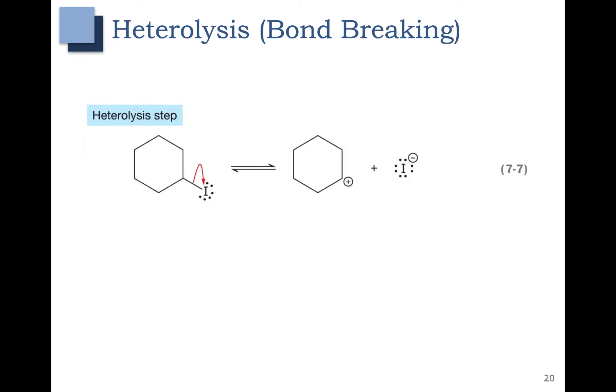Heterolysis or bond breaking is the opposite of coordination. You can see here the carbon iodine bond breaking to form a lone pair on I minus. The carbon iodine bond in red breaks and those become the red lone pair on I minus. Remember that there is a hydrogen at this carbon and that's why there is a positive charge on the carbon once the iodine has left.